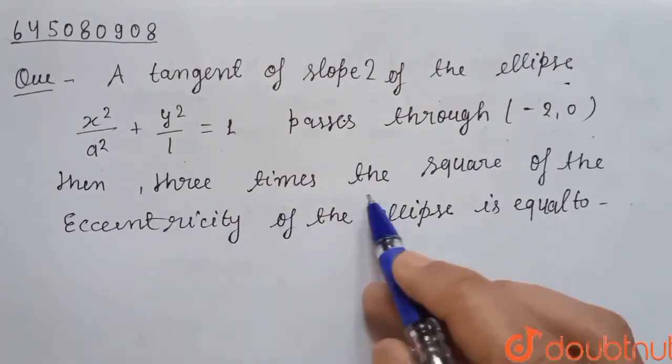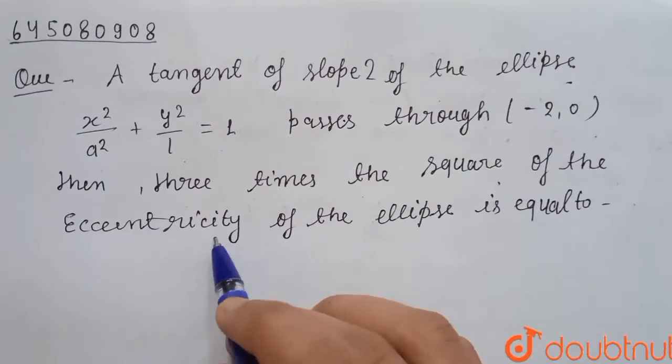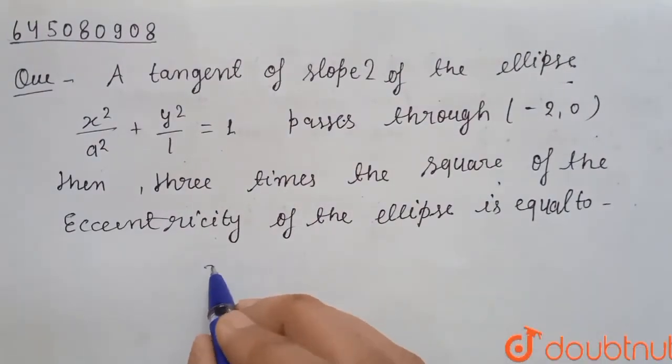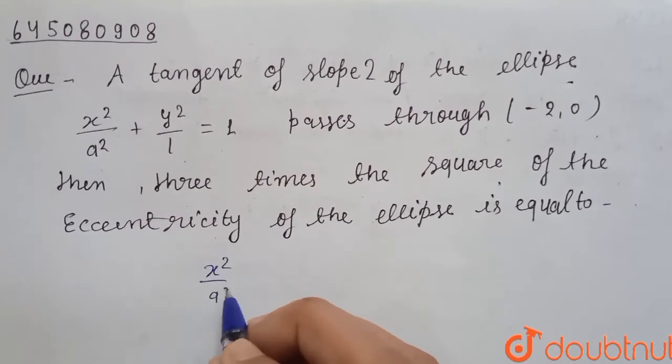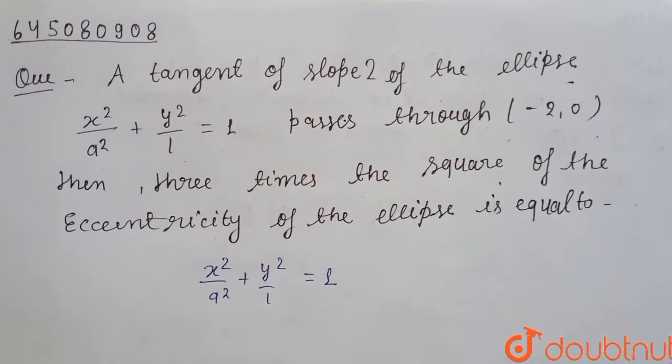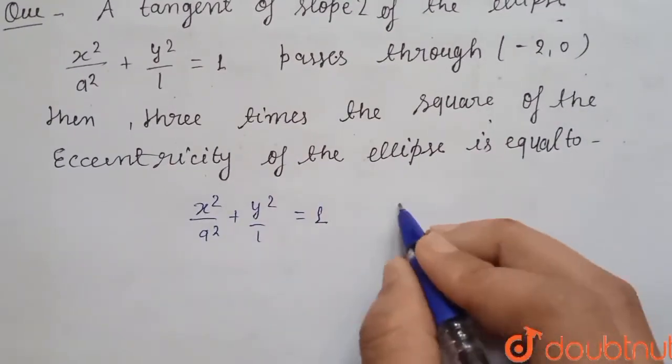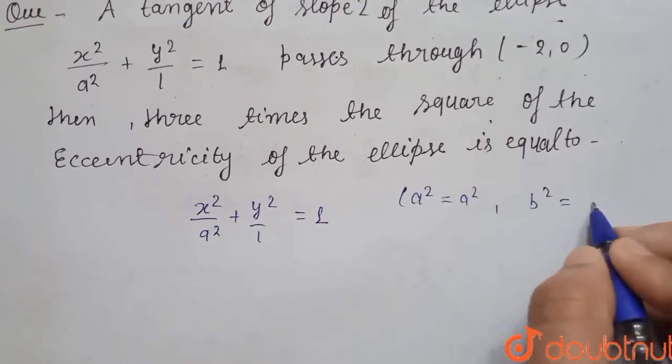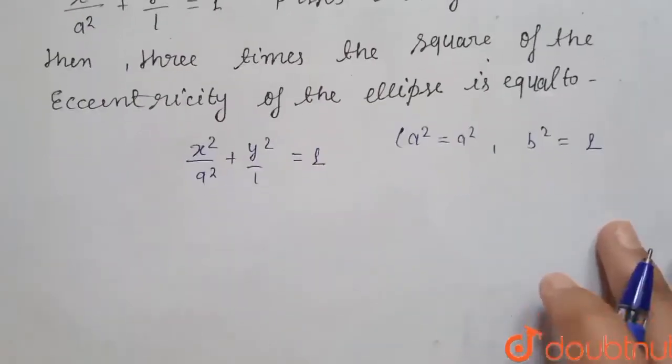Then 3 times the square of the eccentricity of the ellipse is equal to. Here we have given ellipse x² / a² + y² / 1 = 1. In this we can see that our a² is given as a² and b² we have given as 1.